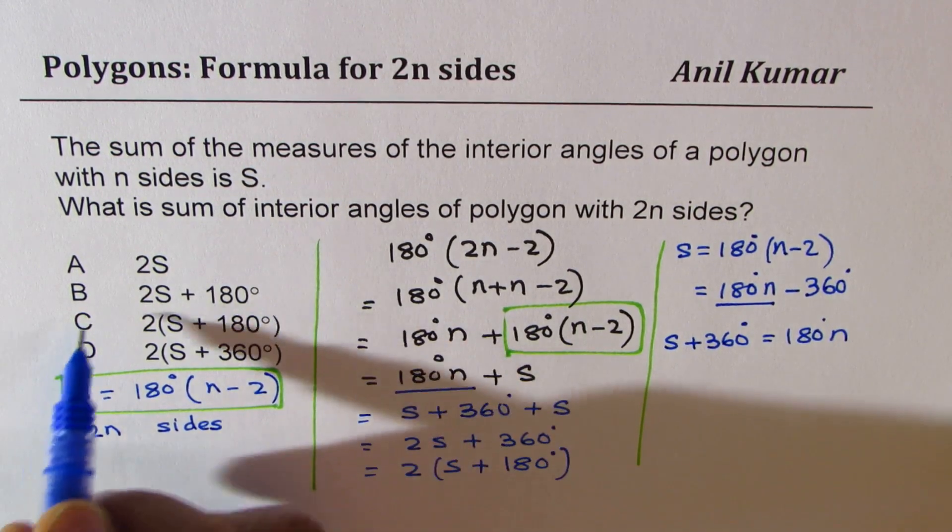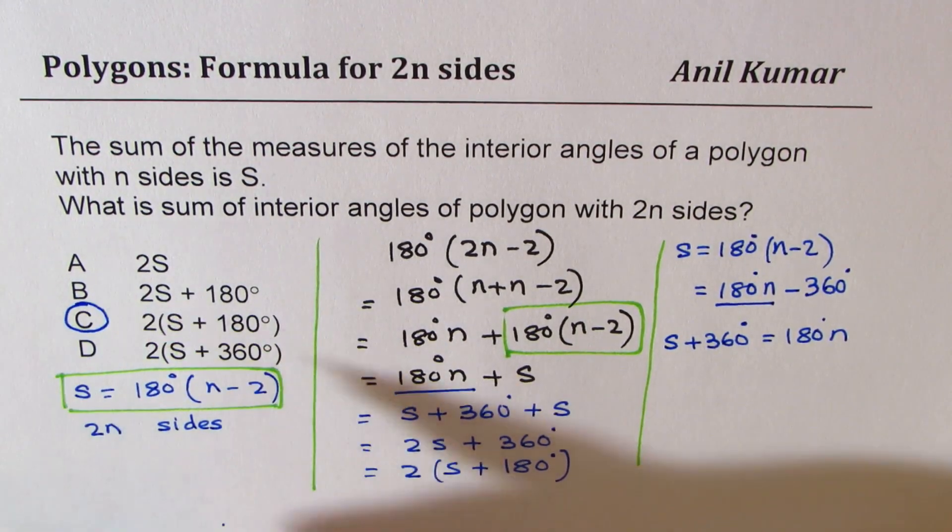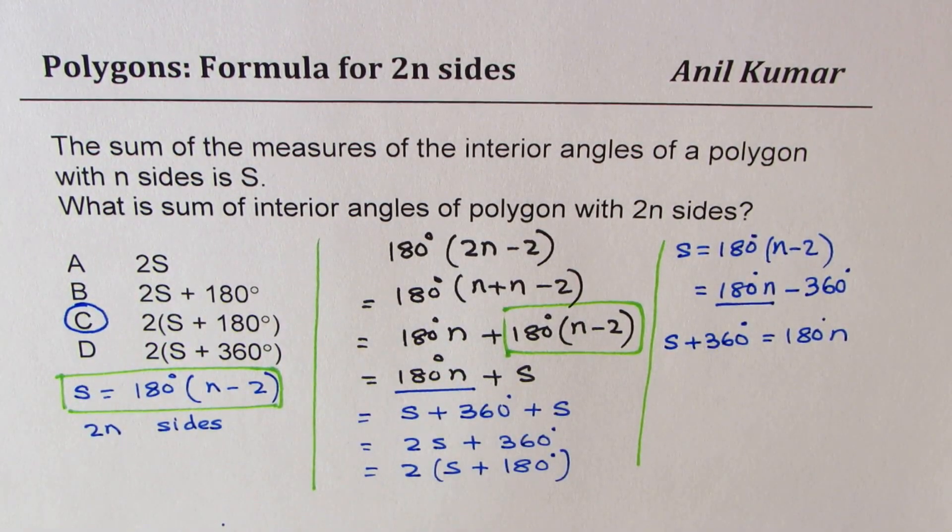So that is the option C. So that becomes the formula. If the number of sides are 2n, correct? So that is how we could find it.